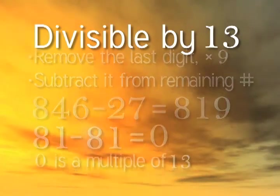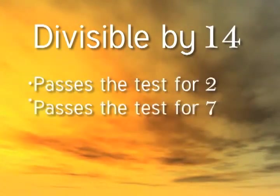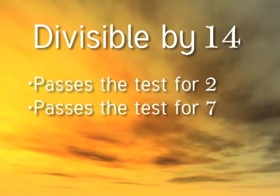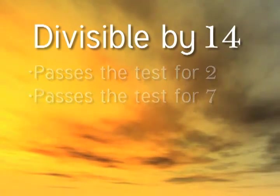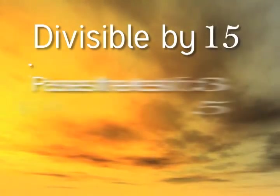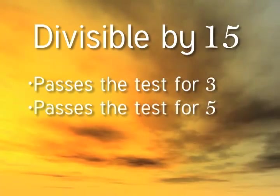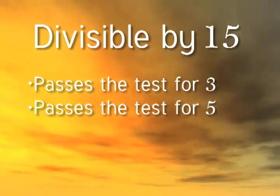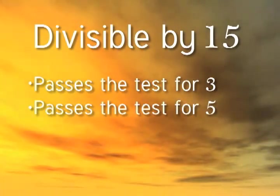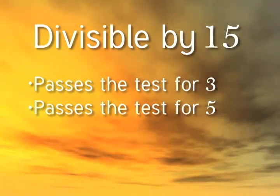A number is divisible by 14 if it passes the divisibility test for 2 and for 7. A number is divisible by 15 if it passes the test for 3 and for 5. Most of these test methods follow patterns that are very easy to remember. The trickier ones are 7, 11, and 13.